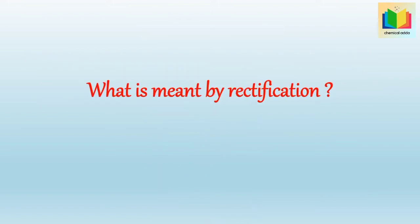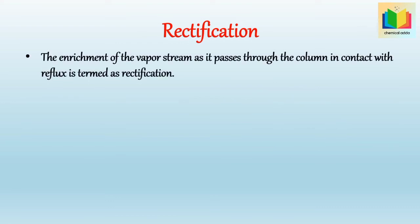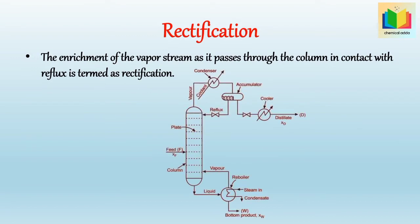Next question: what is meant by rectification? The enrichment of the vapor stream as it passes through the column in contact with reflux is termed as rectification. As we can see in this figure, a part of the condensed liquid is returned back as reflux, and a maximum enrichment of the more volatile component in the vapor is obtained. This is called rectification.